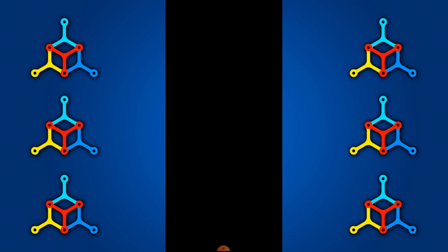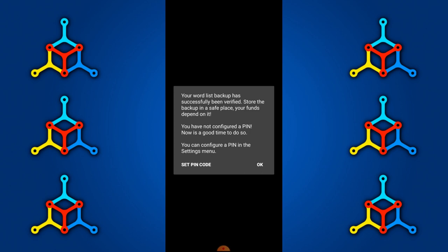Once you've written down all your phrases, the app will ask you to start a verification process. Select 'Verification' and enter the phrases from 1 to 12. I'll fast forward this section — feel free to pause if you need more time. Once you've verified your master seed, it will confirm the verification was successful.